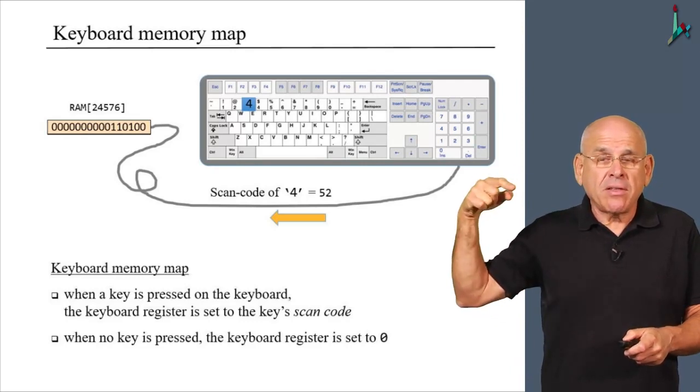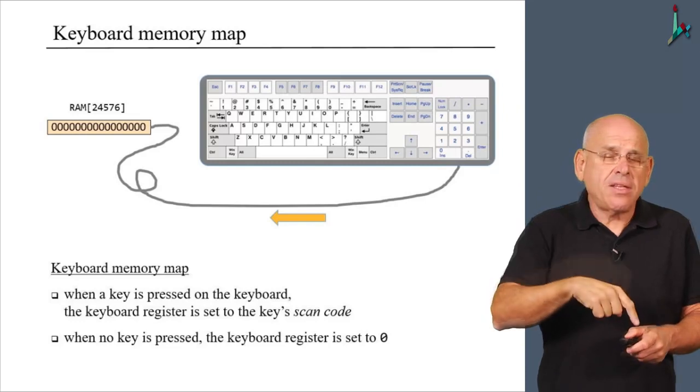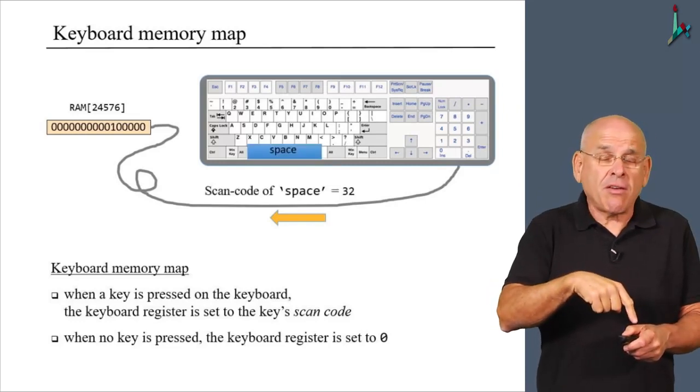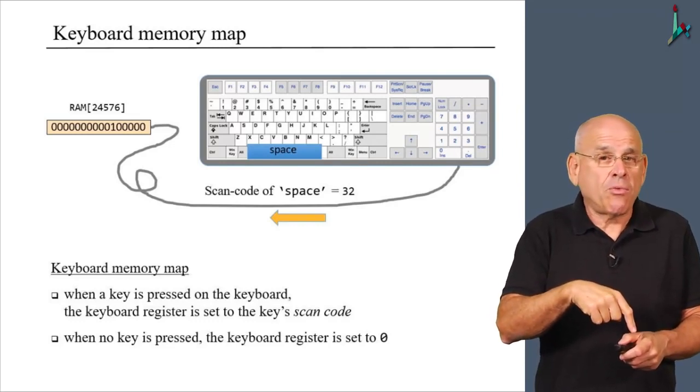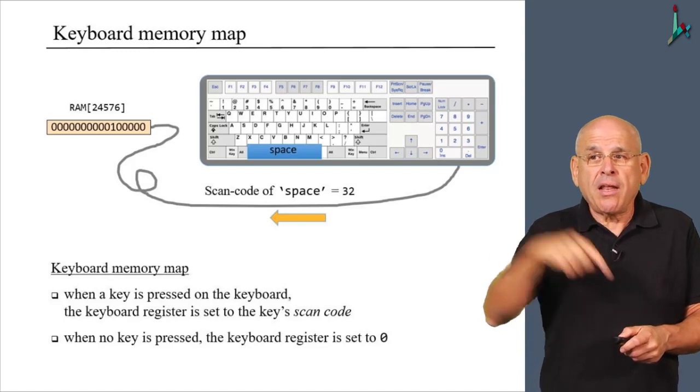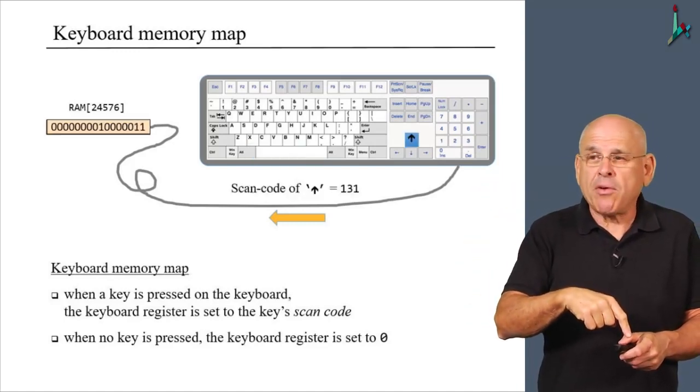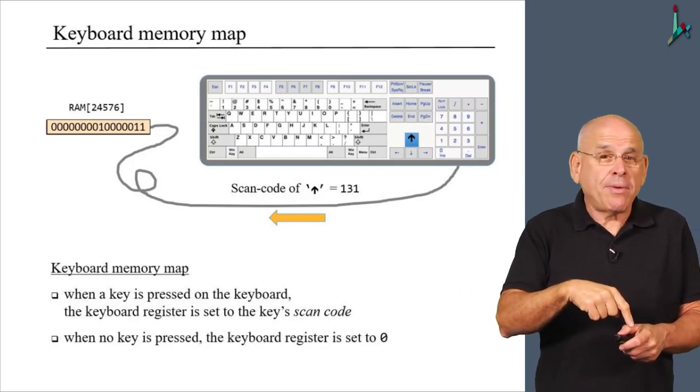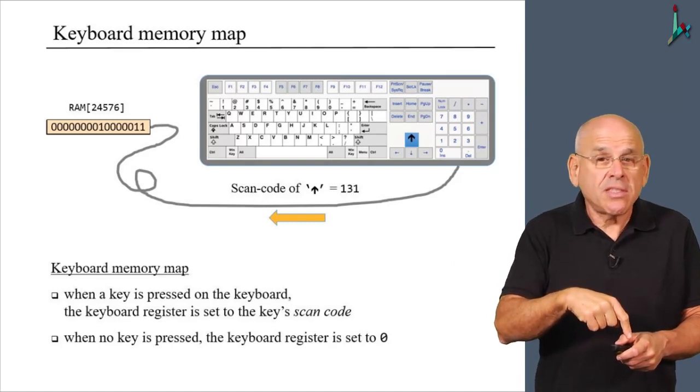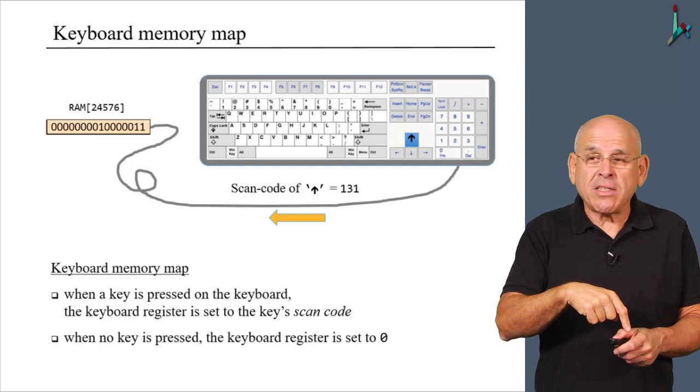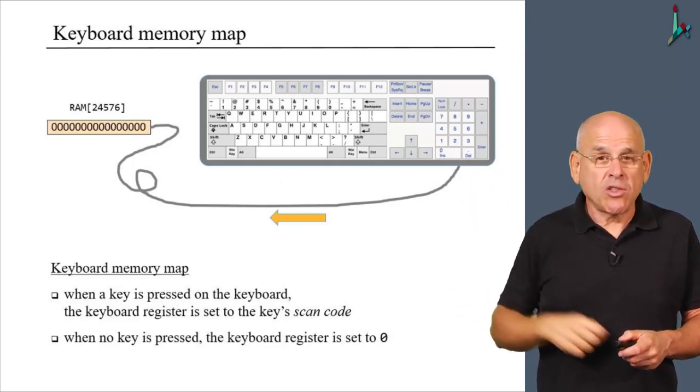Once I lift my finger, I'm going to see nothing, or zero. Put my finger again down, this time on space. As long as the finger is down on space, I'm going to see 32, which happens to be the ASCII value representing space. Lift my finger, I see zero. I put my finger down again, this time on the up arrow key. It so happens that the ASCII code of up arrow is 131, so I'm going to see this number in the keyboard register. Once again, I lift it up, I see zero, and so on and so forth. You got the idea.